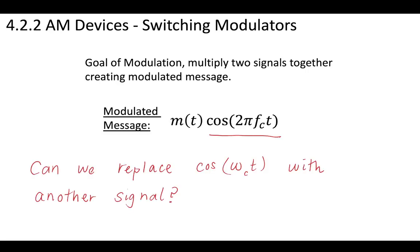Can we replace this with some other signal? That's the question we should ask. We know what the message is — we know we can't replace the message — but could we replace that cosine wave with some other signal? Could we be clever and figure out a way to replace this? The answer is yes, of course, but it's going to take us a little bit of math to get there.